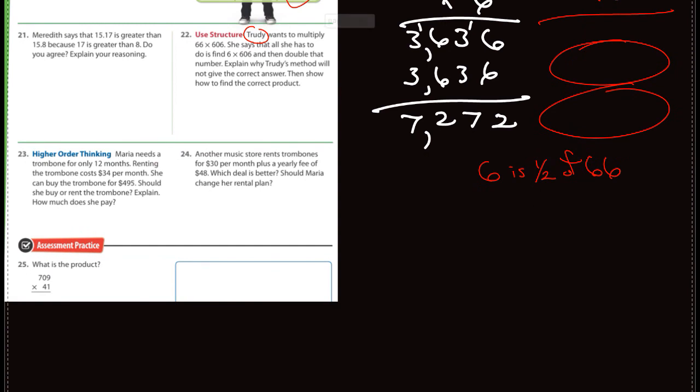23, 24. Maria needs a trombone, 12 months renting, 34 months. She can buy the trombone for, okay. So should she buy it or rent it? That's what they're asking. So you're going to have to figure out which is cheaper, to buy it or to rent it. And so renting it would be 12 months, and each month is 34. So you're going to have to do 12 times 34 and see which is larger. Number 24, another music store rents trombones for 30 per month, plus a yearly fee of $48. Which is a better deal?